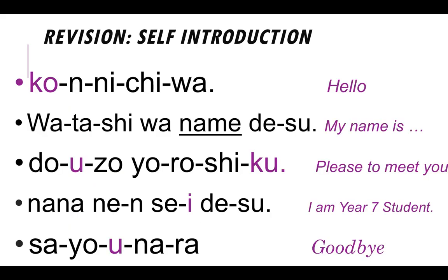I would also like to draw your attention back to the self-introduction we learned in Japanese. Konnichiwa. Watashi wa Steven desu. Douzo. Yoroshiku. Nana nensei desu. Sayonara. Meaning: hello, my name is Steven, pleased to meet you, I'm a year 7 student, and goodbye.